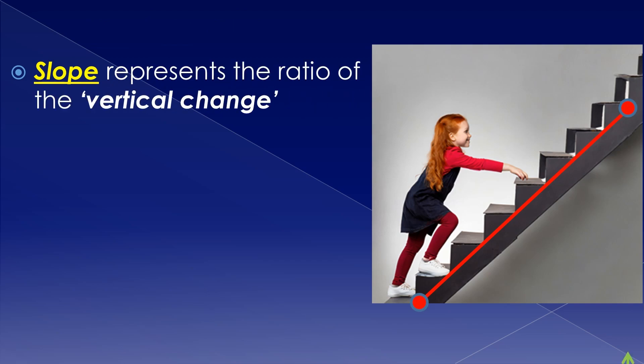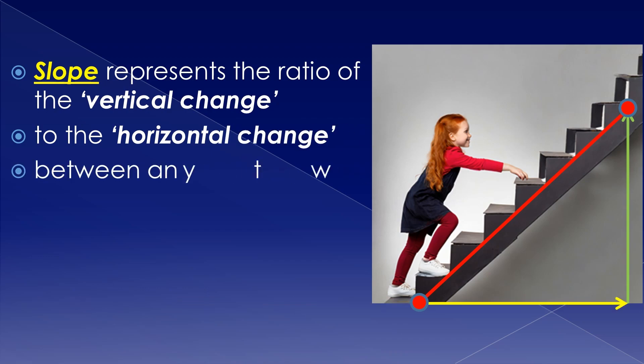Slope represents the ratio of the vertical change to the horizontal change between any two points on the line.